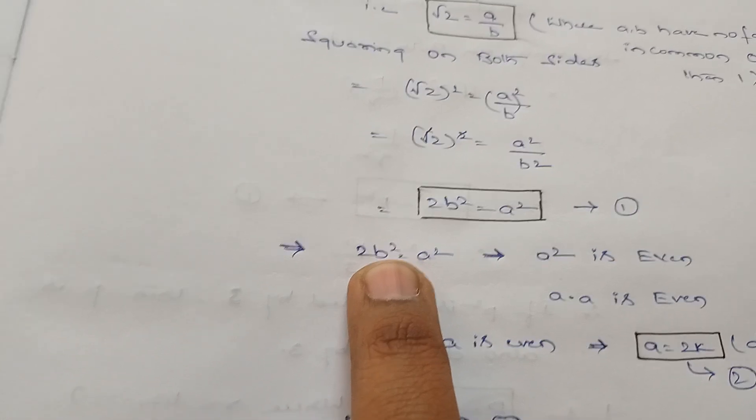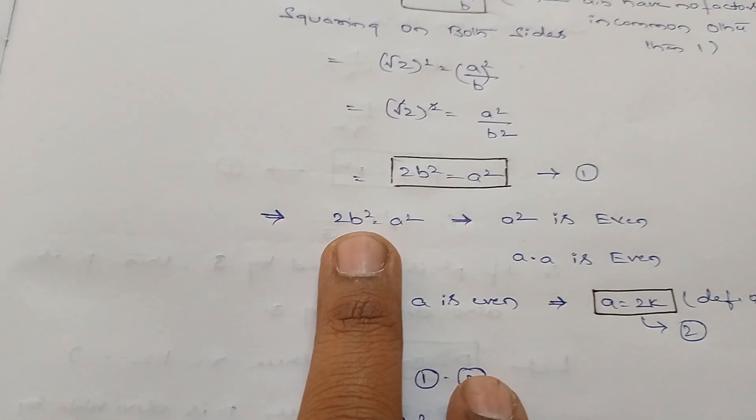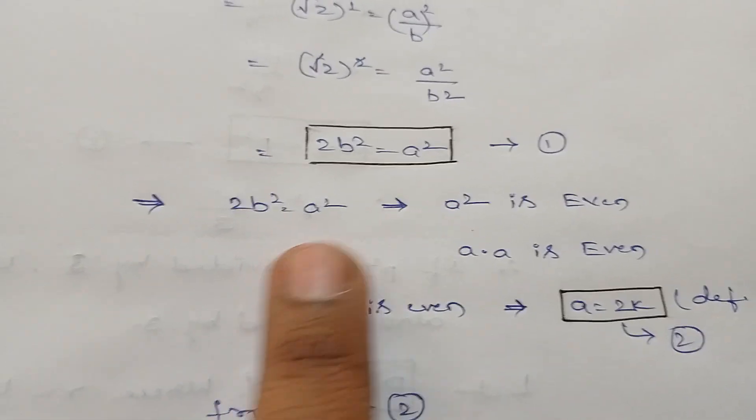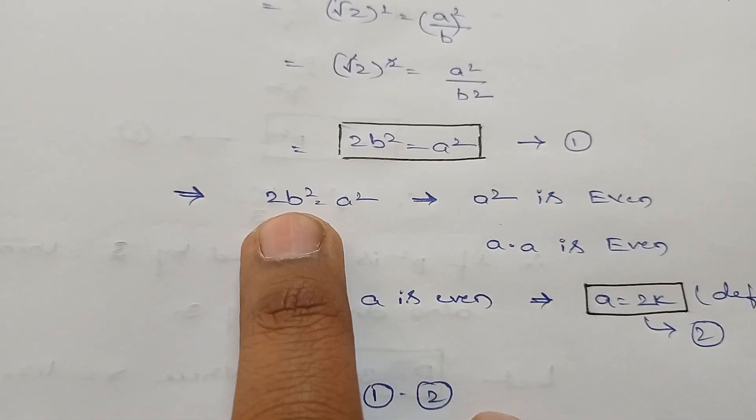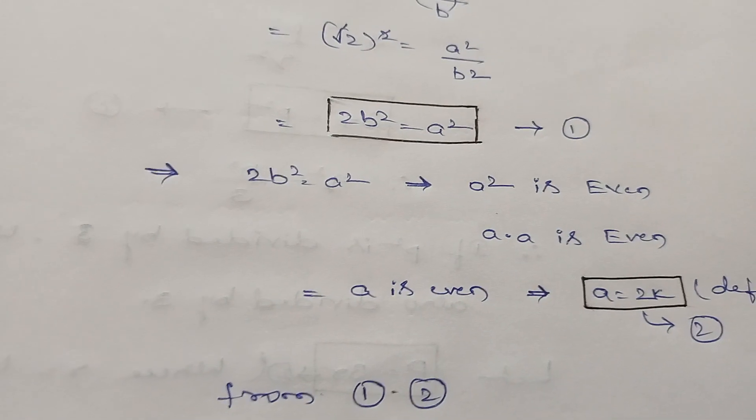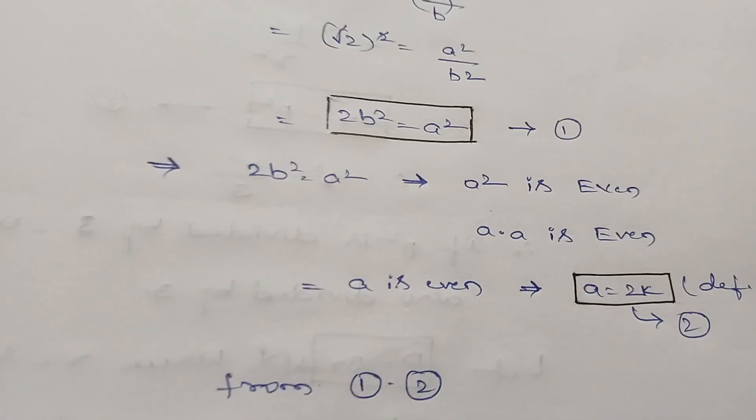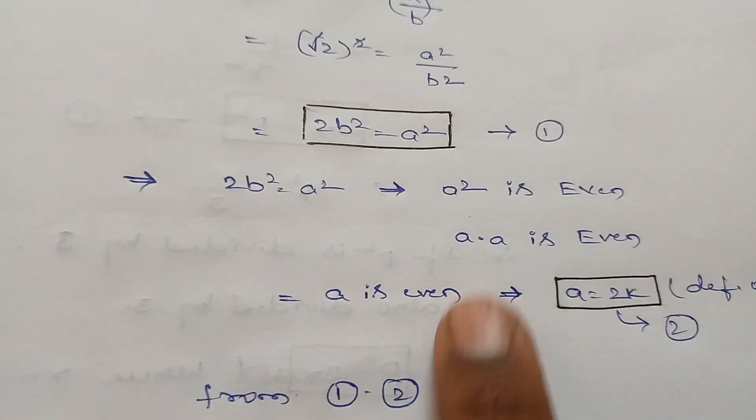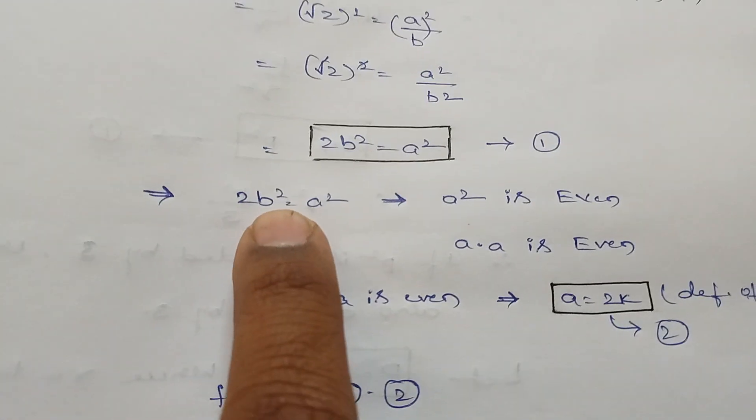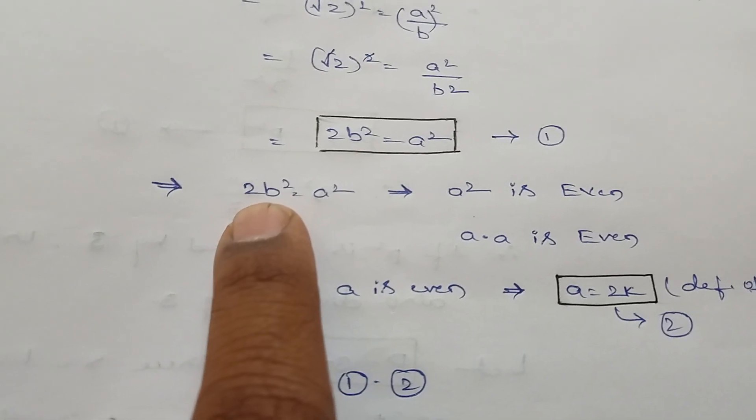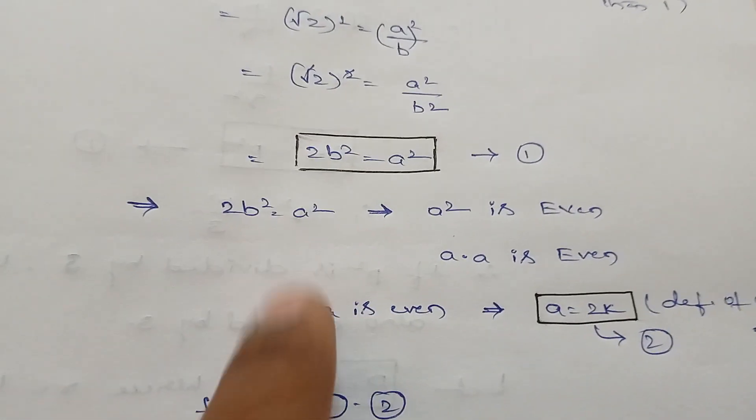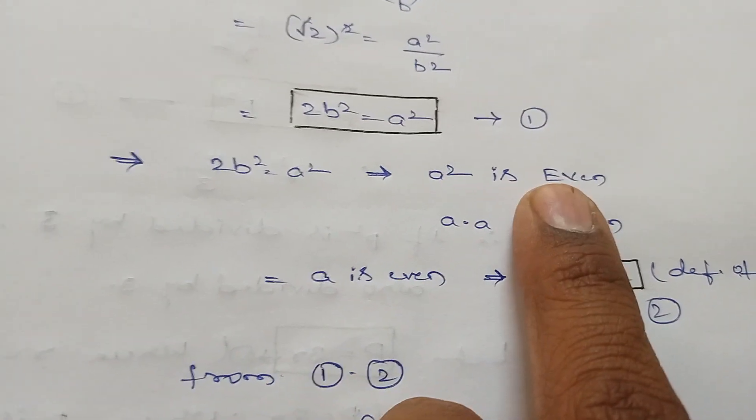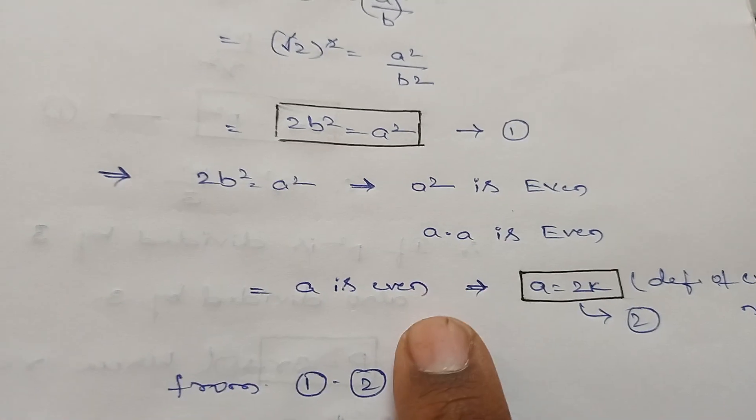From this, what do you observe? We observe that 2b² is in the form of an even number. So a² equals 2b², where 2b² is in even number format 2n. Since 2b² is even, a² is also even. Similarly, since a² is even, a is also even.